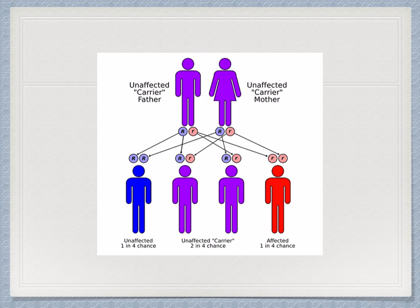It's important to screen who may carry a mutant allele. These individuals will often have a family history of the disease. Screening can determine the probabilities of a couple having offspring with a genetic disorder. Using family history and the results of screening tests, potential parents can obtain advice from a genetic counsellor about the implications if they do choose to have children.